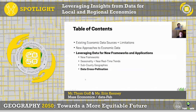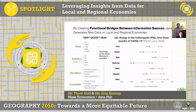The last section is going to talk about some of our applications that leverage the cross-pollination of different datasets. By leveraging the algorithms and methods we've developed for QCW, we've also been able to solve suppressions in other datasets. By combining data from different sources, we're able to generate new data on local and regional economies — creating so-called functional bridges between information sources. Here, we're using a combination of QWI and QCW data that highlights the disproportionate impact of COVID on Black and African American workers and female workers in Marion County, Indiana, showing job change in the Indianapolis MSA from March to June 2020.